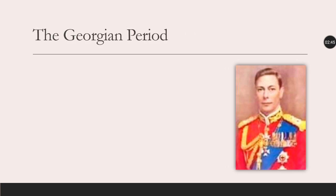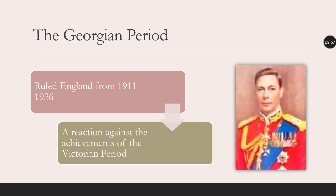After that, we've got the Georgian period. We're going to compare and contrast the two periods — the Victorian versus the Georgian period — which was under the ruling of King George. He ruled England right after Queen Victoria, from 1911 to 1936. There was a reaction against the achievements of the Victorian period, and there was another change in England.